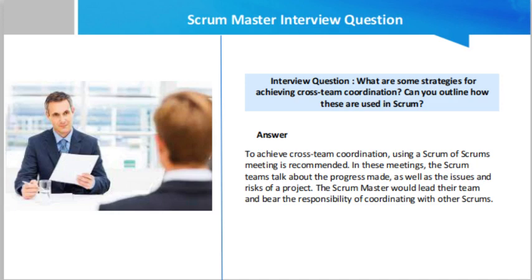A Scrum of Scrums is a technique to scale Scrum up to large groups of over 12 people, where the group is divided into agile teams of 5 to 10 each. Each daily scrum includes a designated member as an ambassador to participate in daily meetings with ambassadors from other teams — this is called the Scrum of Scrums. It is a cross-team synchronization method used when multiple teams are involved in daily stand-up meetings.